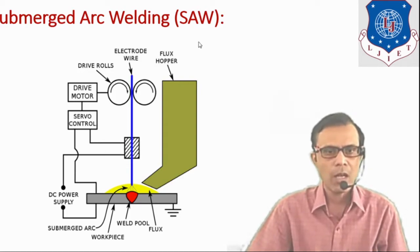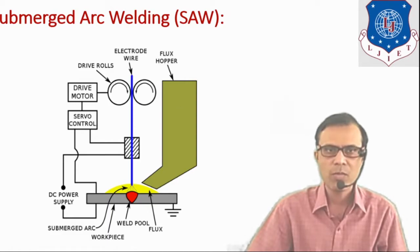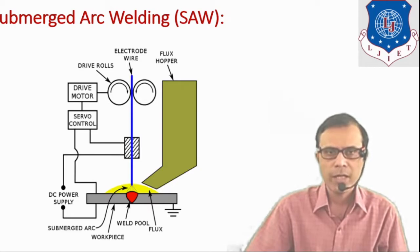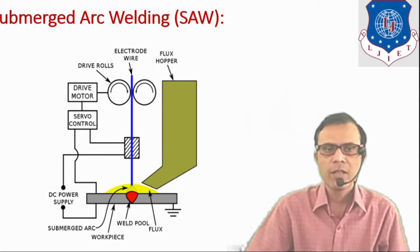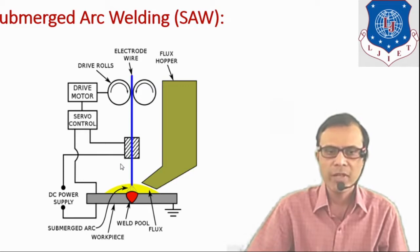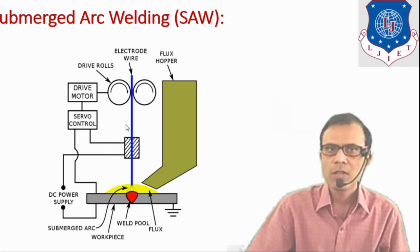The equipments which are used are flux hopper, electrode wire, feed rolls, drive motor, servo motor to control the feed of the electrode wire, and DC power source. So here the function of this flux hopper is to store the flux and to provide the flux as per the requirement. So deposition rate of the flux is controlled by this flux hopper. Here, consumable electrode is used and it is continuously fed with the help of these drive rolls, which is rotated with the help of the drive motor. So it is a consumable electrode and continuously it is fed throughout the welding process. The feed of this electrode can be controlled with the help of servo control device. Power source is also used as shown here.